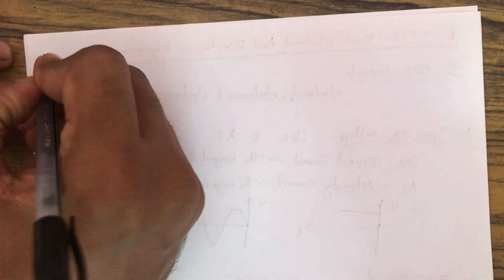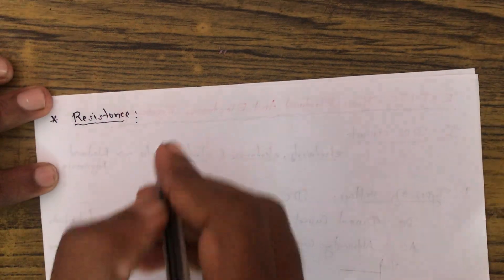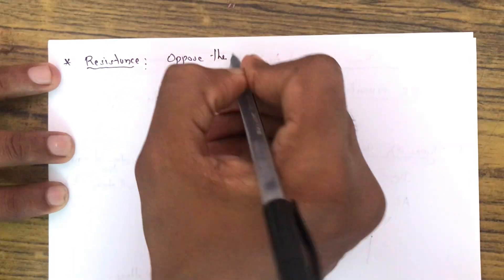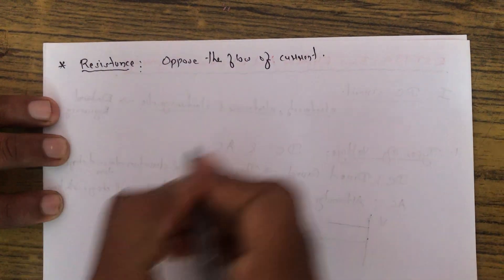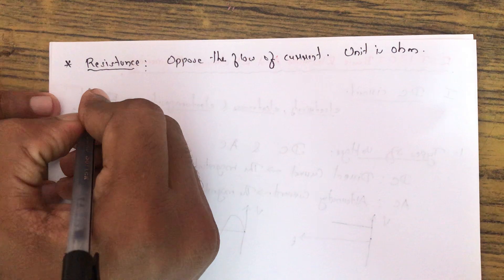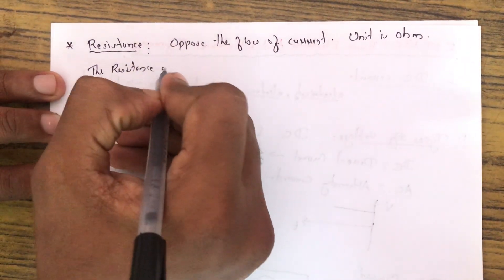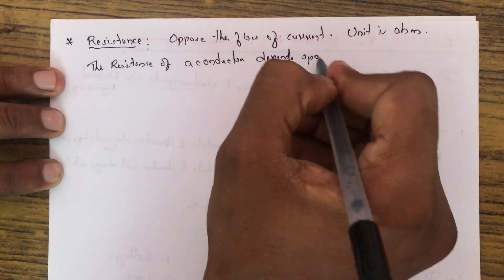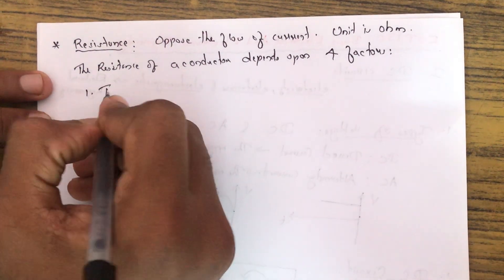Now let us look at resistance. Resistance is the property of a material to oppose the flow of current. Its unit is ohm. The resistance of a conductor depends upon four factors.